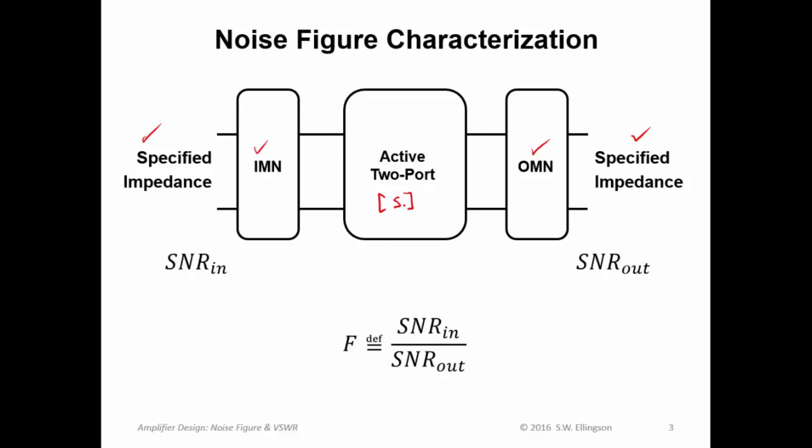And then in a previous lecture, we talked about noise figure. Noise figure was defined as the ratio of the input signal-noise ratio to the output signal-noise ratio, where the input signal-noise ratio is computed at the very input of this structure, and the output signal-noise ratio is computed at the output of this structure.